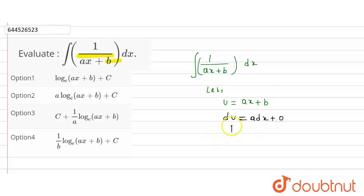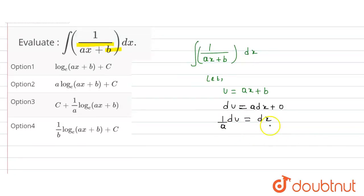So 1 upon a into du is equal to dx. Now replace dx by du. So this will be integration of 1 upon u, where u is ax plus b, and this will be du.